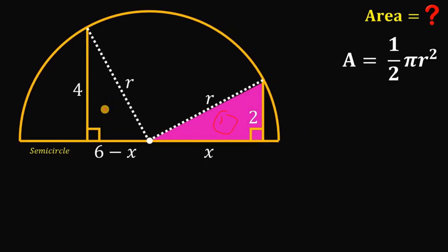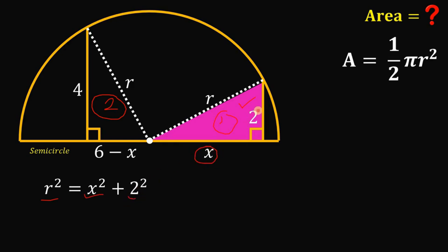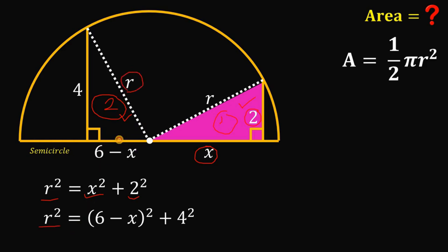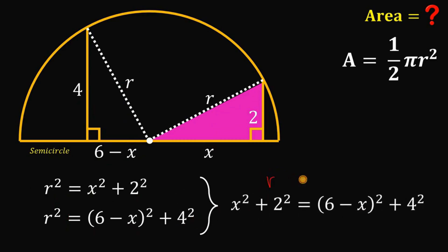We're going to use these two right triangles right over here. We will use the Pythagorean theorem. Using the Pythagorean theorem on our first triangle, we have: r squared equals x squared plus 2 squared, where r is the hypotenuse. Using the Pythagorean theorem on our second right triangle, we have: r squared equals (6 minus x) squared plus 4 squared. Since both expressions are equal to r squared, we can say x squared plus 2 squared equals (6 minus x) squared plus 4 squared.